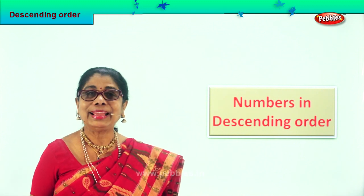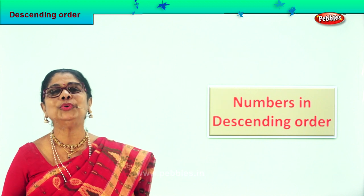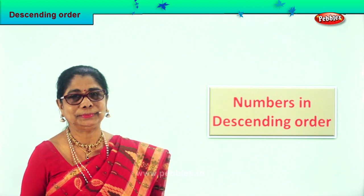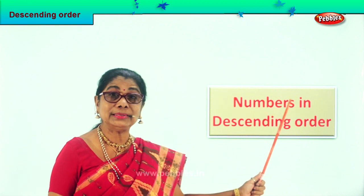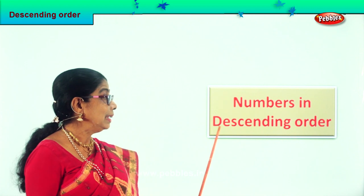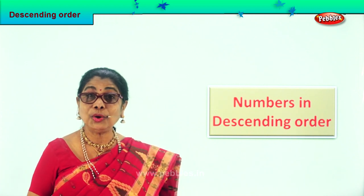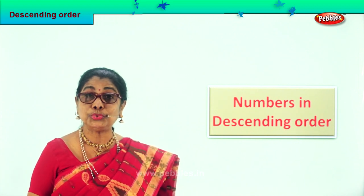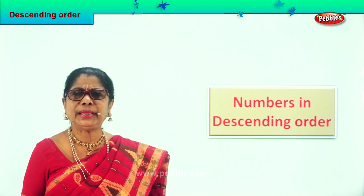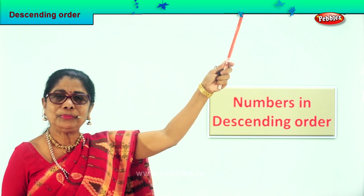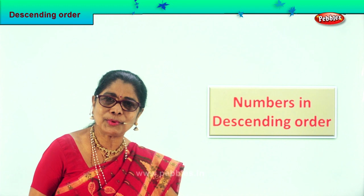Hi children, now we are going to learn how to arrange a number in descending order. So here we are going to find the biggest number, put it right on the top, then smaller and smaller.